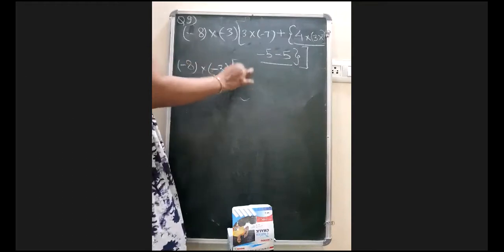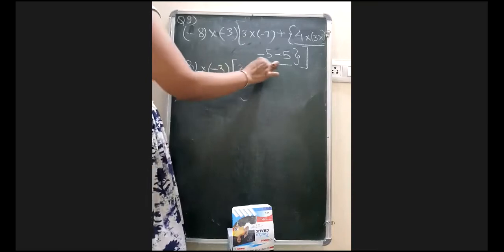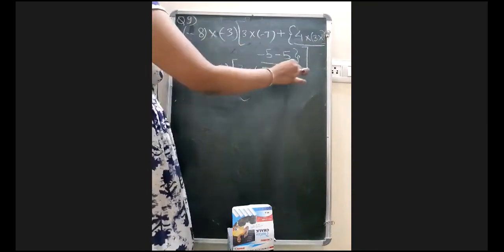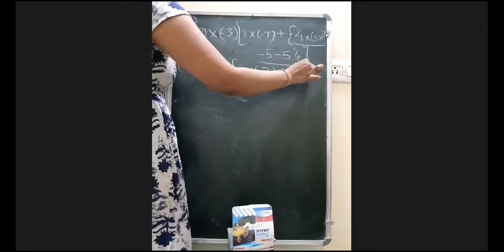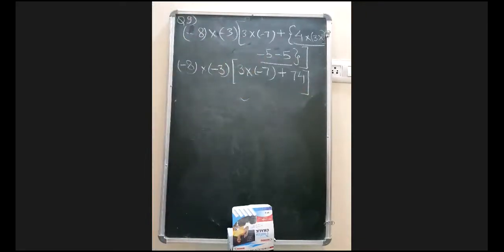So now as you all have seen, we have solved this one and we have got 74. So I will replace with 74 this one. Now the question will look like 3 into minus 7 plus 74 and we have removed that curly bracket because we have solved that curly bracket. Now as you all can see this is minus 8 and this is minus 3 and you are knowing both are written in the form of multiplier. So we can directly multiply this one. So minus 8 and minus 3 will get multiply which will give us plus 24.